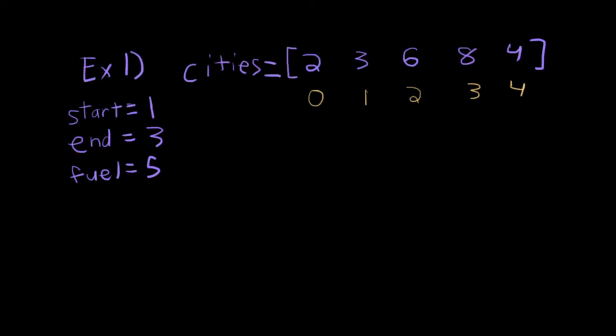In this first example, I've drawn it out for you. I'd like to just go over how we can read this problem. So we're given an array called cities here. In this first example, it's 2, 3, 6, 8, 4. And I've drawn in yellow the indices that represent these. Our start is index 1, our end is index 3, and we have five units of fuel to start out with.